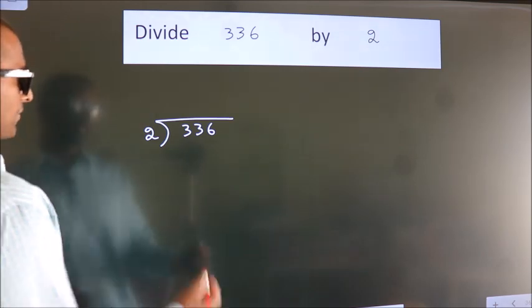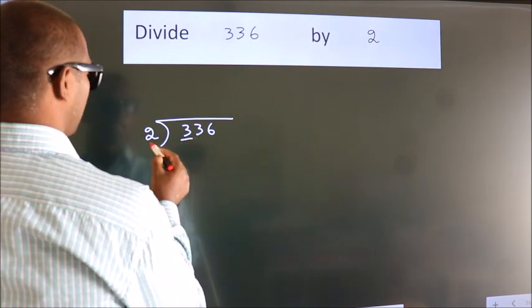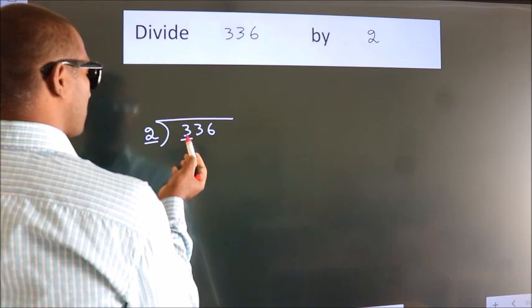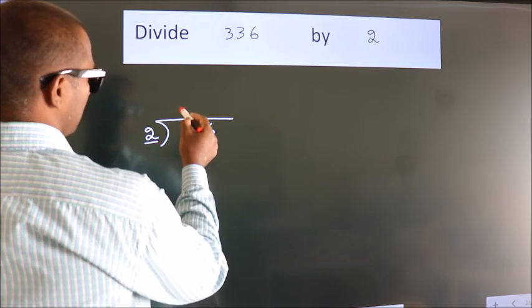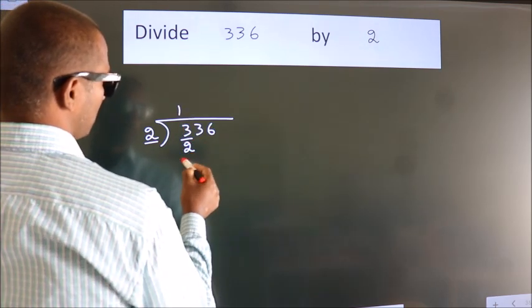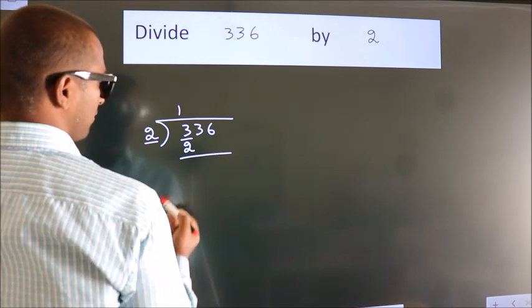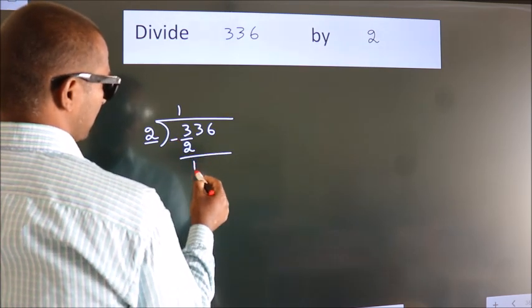Next, here we have 3, here 2. A number close to 3 in the 2 table is 2 ones are 2. Now we should subtract. We get 1.